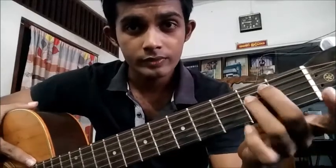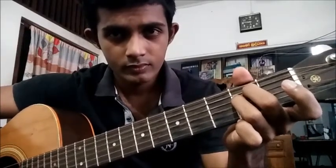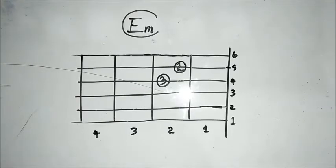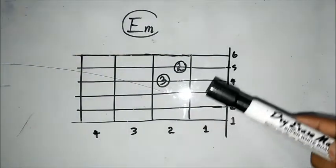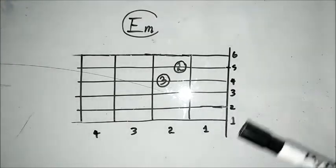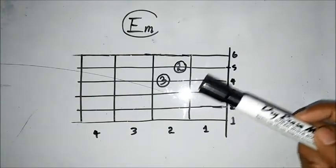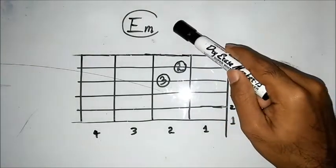4th string, 2nd fret — I will play with the E minor chord. Let me show you the first finger. If you are not sure, please make a comment in the comment section. 3rd fret, 2nd and 3rd finger.